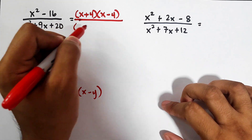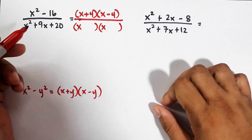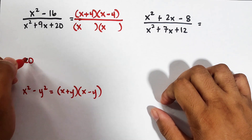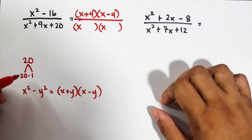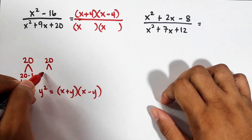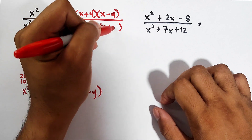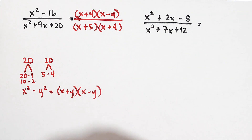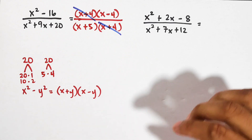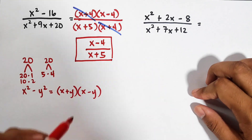For the trinomial x squared plus 9x plus 20, we need factors of 20 that add up to 9. Listing the factor pairs: 20 times 1, 10 times 2, and 5 times 4 — since 5 plus 4 equals 9, the trinomial factors as x plus 5 times x plus 4. Canceling the common factor x plus 4 leaves us with x minus 4 over x plus 5 as the simplified form.